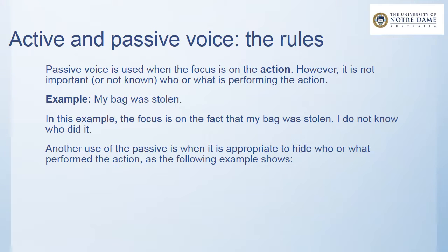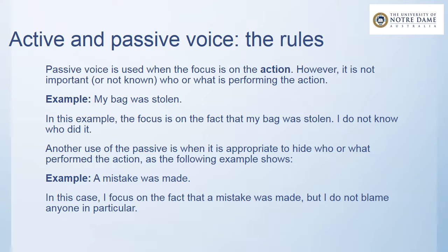Another use of the passive is when it is appropriate to hide who or what performed the action, as the following example shows: a mistake was made. In this case, the focus is on the fact that a mistake was made. I do not blame anyone in particular, or maybe I do blame somebody but I don't want to say who it is.